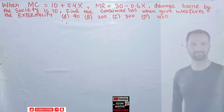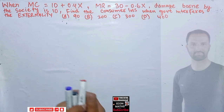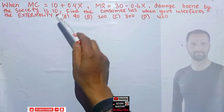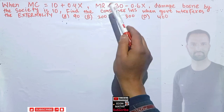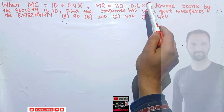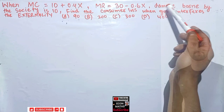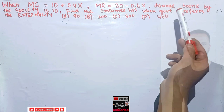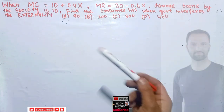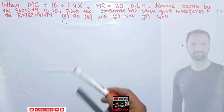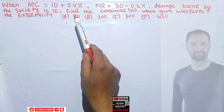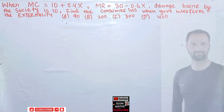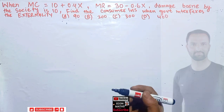Hi, this is Halal. In this video on the mathematical economics series, we will solve another problem on externality. In this case we have to find the change in consumer surplus. The question gives us: marginal cost is 10 plus 0.4x, marginal revenue is 30 minus 0.6x, where X denotes quantity, and damage borne by the society equals 10. Find the consumer loss when the government interferes at the externality. The options are 90, 200, 300, or 400.